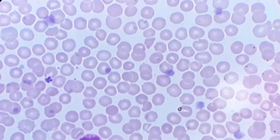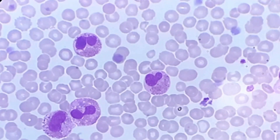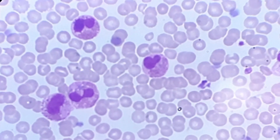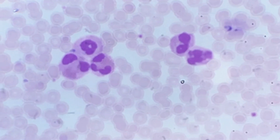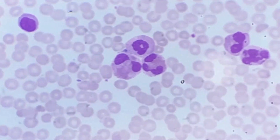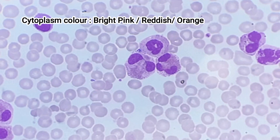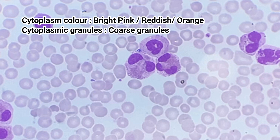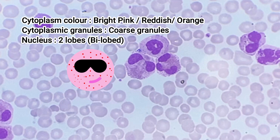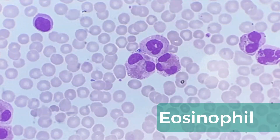Let's come again to the cytoplasm of granulocytes. Is the cytoplasm color bright pink, reddish, or orange? Are the granules coarse or larger? Is the nucleus bilobed — doesn't it seem like someone wearing big goggles on their eyes? This cell with big goggles is none other than eosinophil. Also notice their size is a bit larger than the neutrophil.